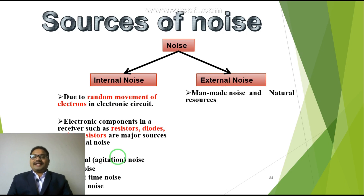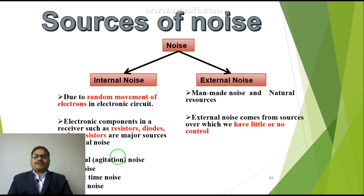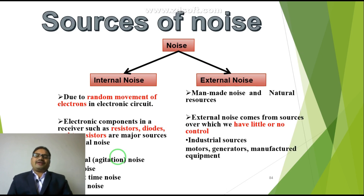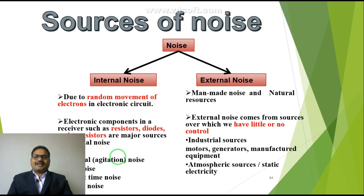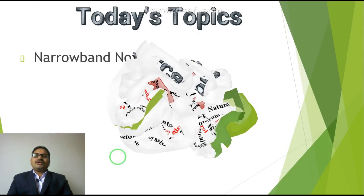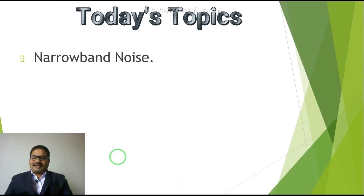We also saw that external noise is categorized as man-made noise and natural noise — noise from sources over which we have little or no control, such as motors, generators, and industrial equipment. We also covered atmospheric sources such as electrostatic noise, cosmic noise, and solar noise. Now let's move on to today's topic: narrow band noise.